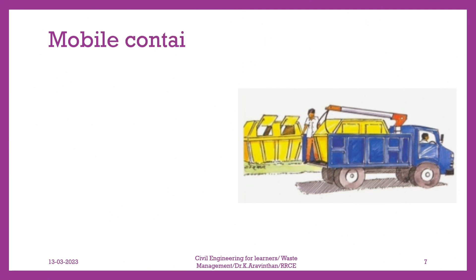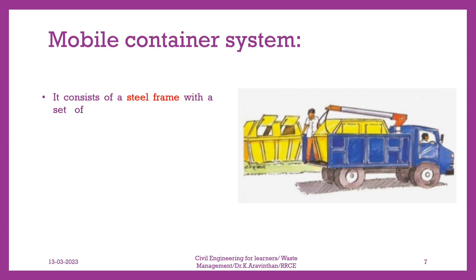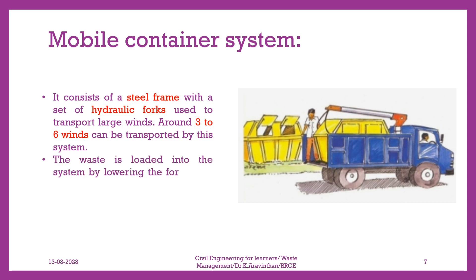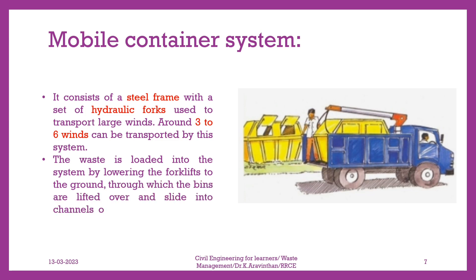Mobile container system. It consists of a steel frame with a set of hydraulic forks used to transport large bins. Around 3 to 6 bins can be transported by this system. The waste is loaded into the system by lowering the forklifts to the ground, through which the bins are lifted over and slide into channels on the underside of the bins.